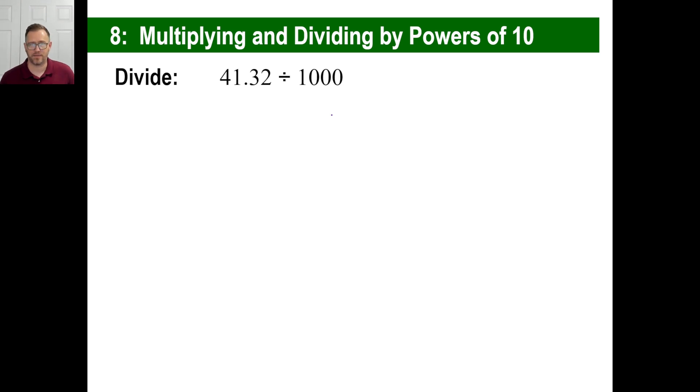Okay. Now we're dividing by a thousand. If you multiply it by stuff and you move it to the right, when you divide, you move it to the left. And that's all. Divided by a thousand, that's three zeros, which means you go one, two, three, decimal. There we go. Point zero, four, one, three, two. Dollars to it. There you go.